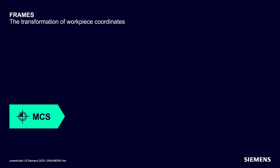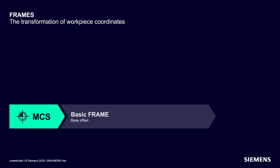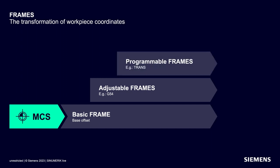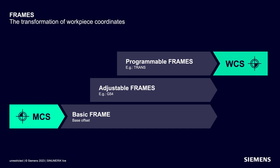Let's begin with the MCS machine coordinate system. The basic offset, the so-called basic frame, is laid on top of this — it is an additional subordinate settable work offset. This is followed by the actual settable work offset, for example G54. Then comes the programmable coordinate transformations, the frames. Finally, the workpiece coordinate system, the WCS, is defined.